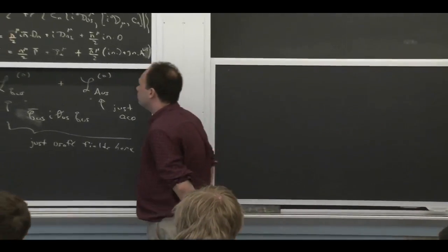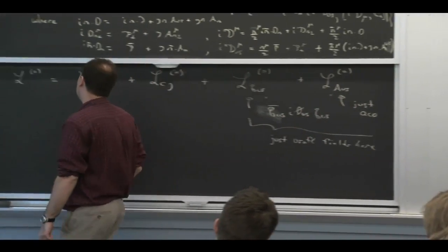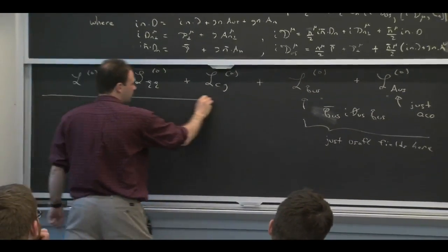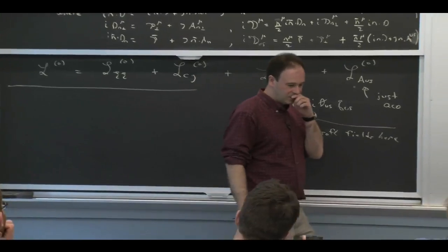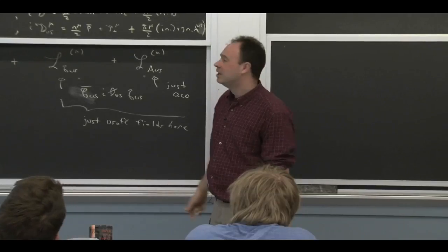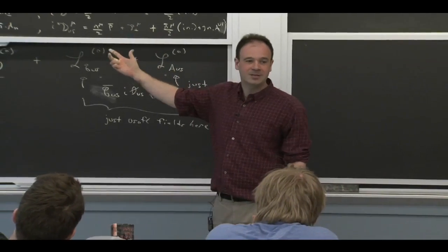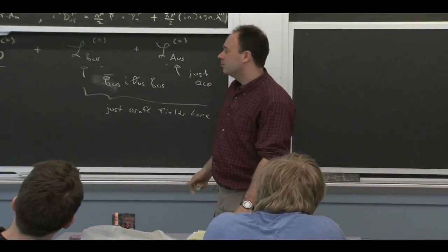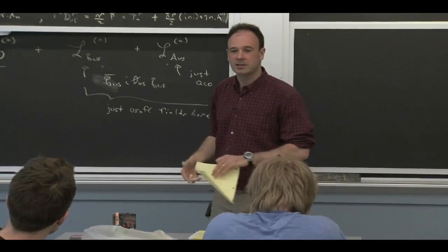Everything that we did in deriving these actions is tree level. All the steps were tree level. So you can ask, if I start to do loops, will there be some Wilson coefficient that shows up somewhere here? Will I generate some new operators that I don't see here? Those are reasonable questions, and that's what we're going to address next.